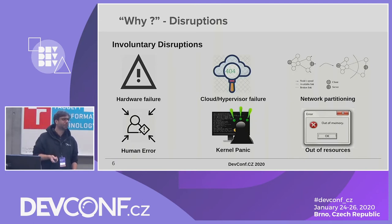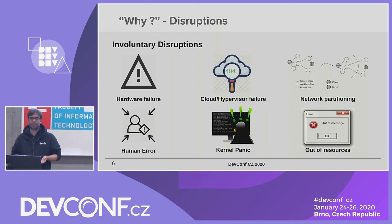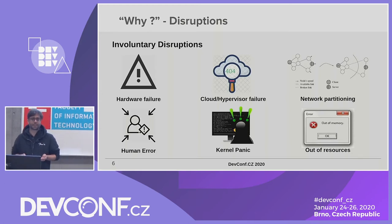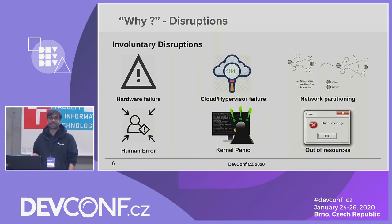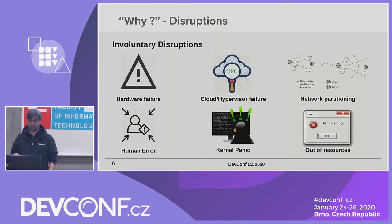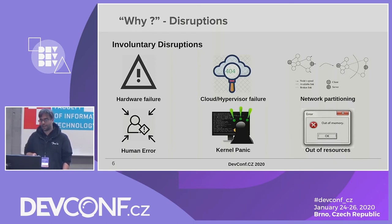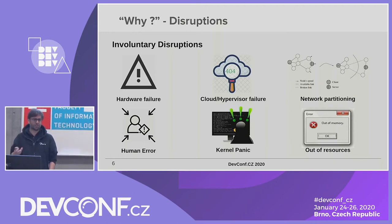Let's understand how pods are being evacuated or evicted from a specific node, either intentionally or not intentionally. We can split it into two types of disruptions. Involuntary disruptions happen without us intentionally doing something. Some examples: the classic hardware failure, where my machine breaks and goes down. Human error happens from time to time — a cluster admin accidentally brought down a VM. A VM can disappear on a cloud or hypervisor, kernel panics of course, and a node can go missing if there's network partitioning. All of these are classic day-to-day failures.